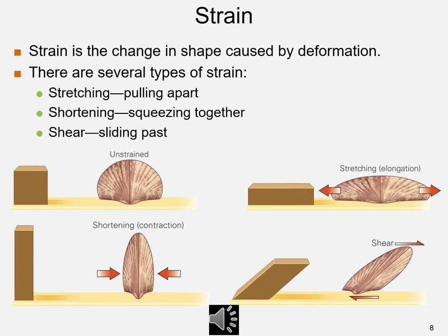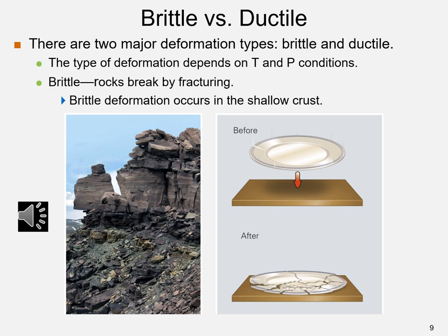The type of deformation, brittle or ductile, depends on temperature and pressure. Brittle deformation, rocks breaking by fracturing, occurs in the shallow crust, generally above 10 kilometers in depth, where temperatures are cooler and pressures are less. The diagram shows a plate falling and cracking into many pieces, and the photograph shows cracks in quartzite beds along the side of a cliff — brittle deformation.